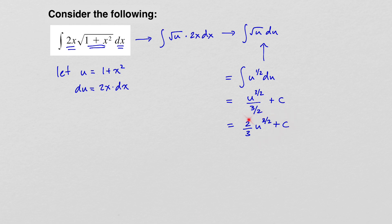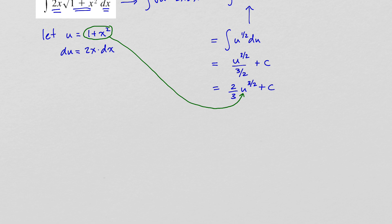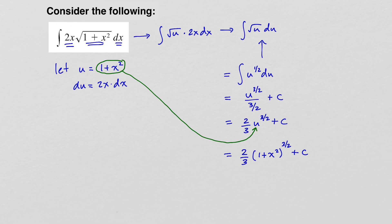But this isn't the antiderivative of our original function — it's the antiderivative of the square root of u. So at the end of the problem, we go back to our substitution u equals 1 plus x squared and substitute it back in for u. We get 2 thirds times 1 plus x squared to the 3 halves plus c. This process is essentially called the substitution rule.